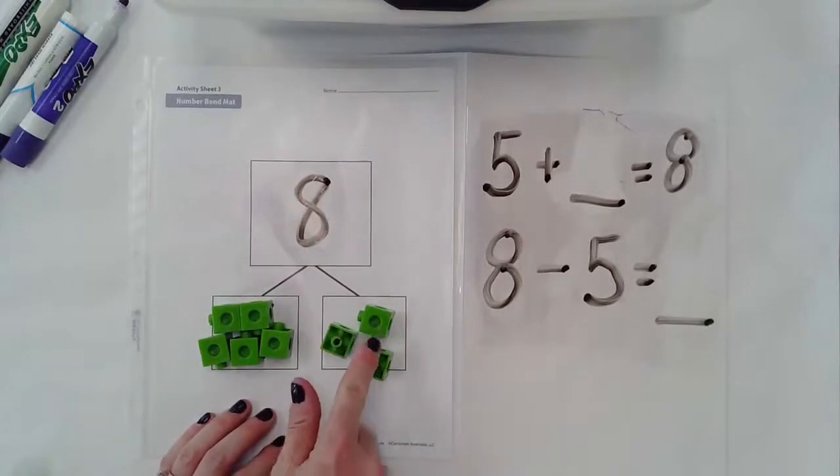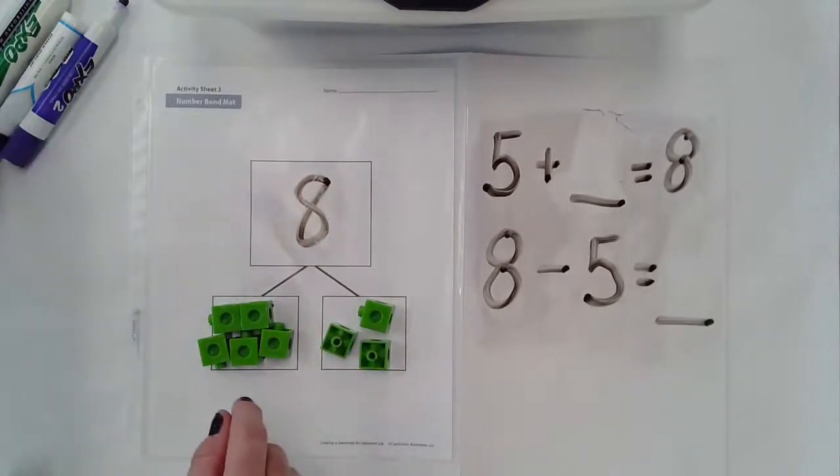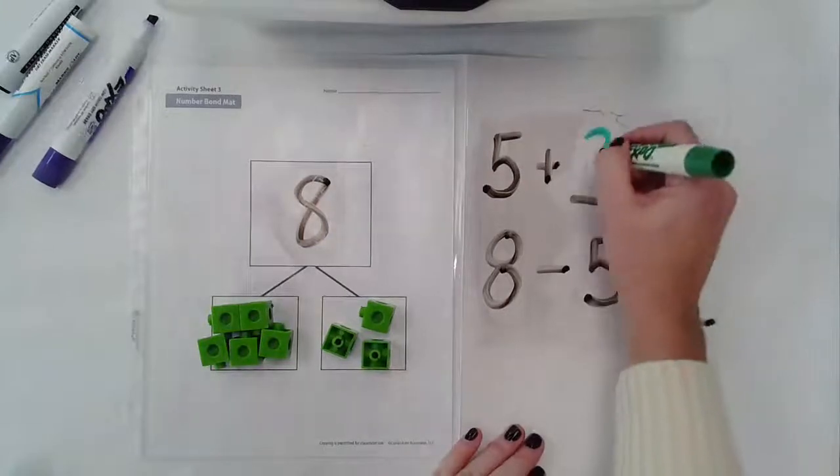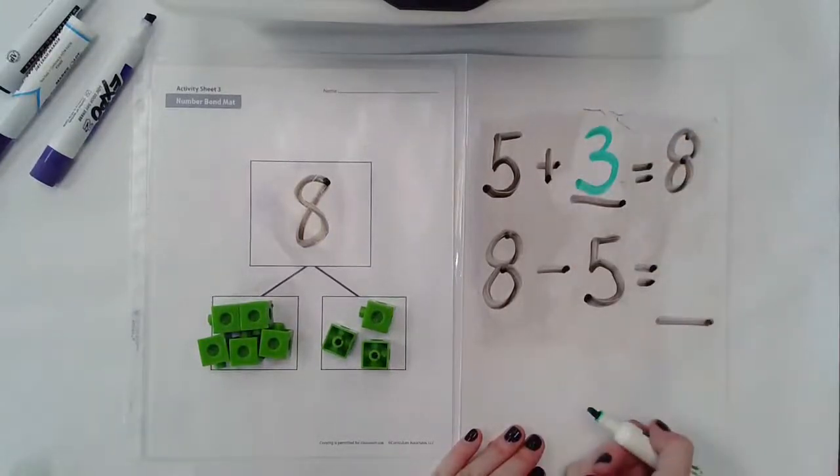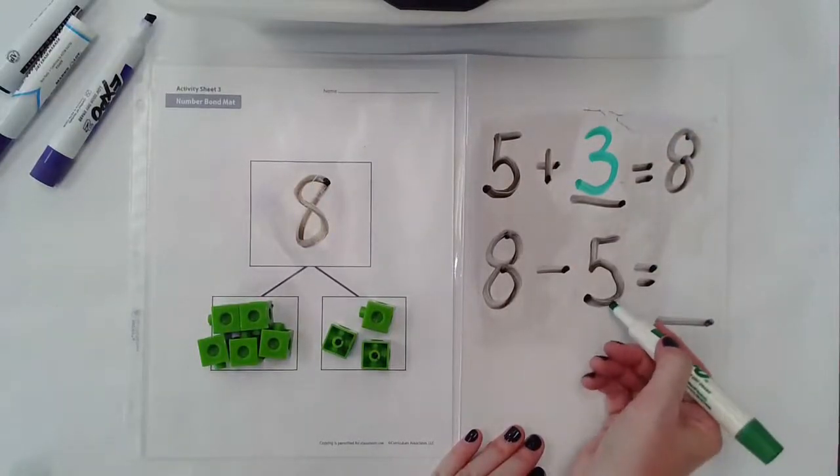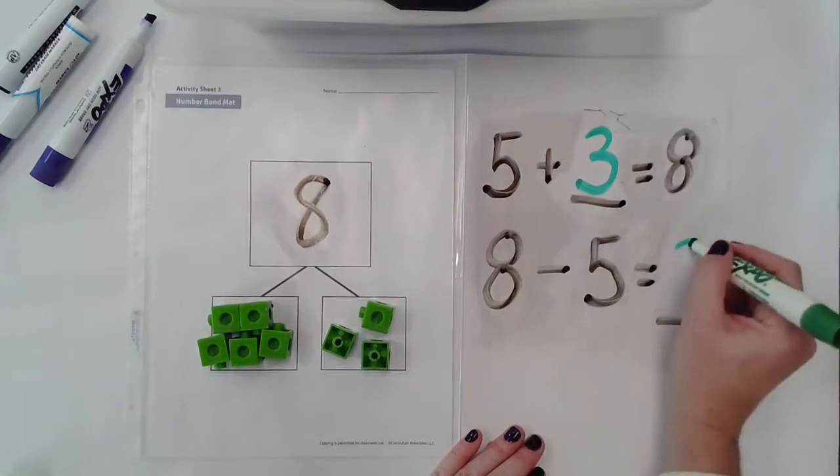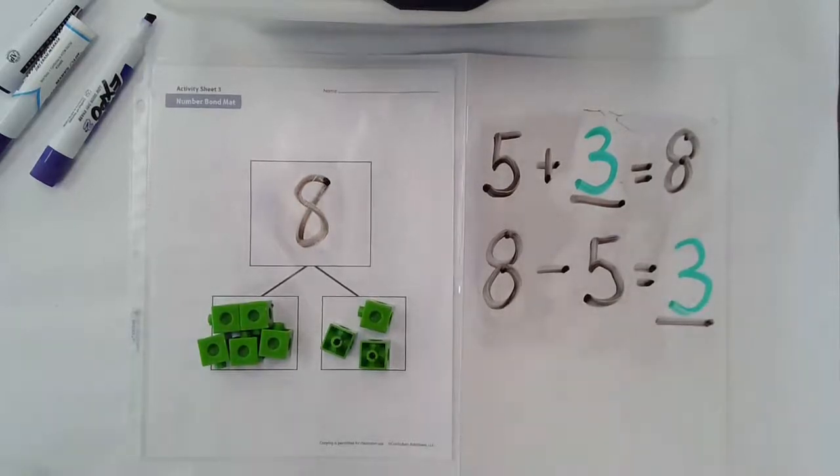Let's count: one, two, three. So three and five will give us eight. And then if I take five away from eight, I'm going to have three left over.